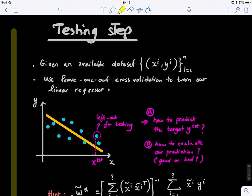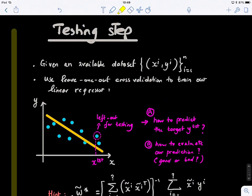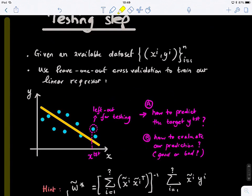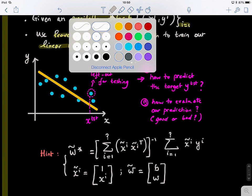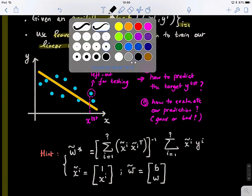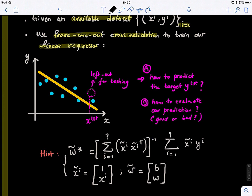Now we trained our model, we solved it. We found our optimal W given an available data set. So this is the data set that we have with N samples. What we will use is leave-one-out cross-validation to train the linear regressor. So let's look at this case. We have different points and I'm considering that here this point we will mask it because we will leave it out. I'm masking that point, taking it as a testing subject.